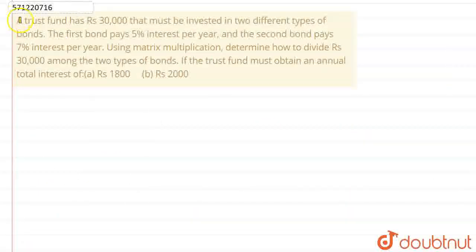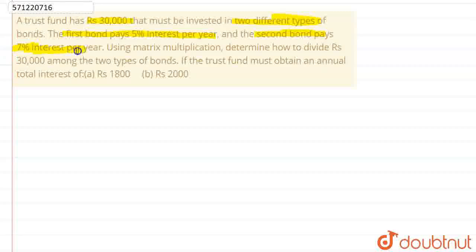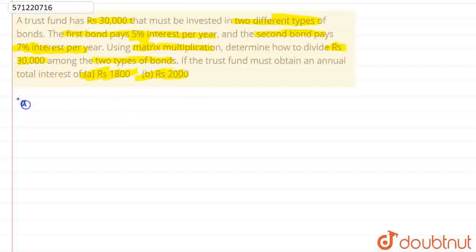Hello students, let us read this question. It is given as: a trust fund has Rs. 30,000 that must be invested into two different types of bonds. The first bond pays 5% interest per year and the second bond pays 7% interest per year. Using matrix multiplication, we have to determine how to divide Rs. 30,000 among two types of bonds. If the trust fund must obtain an annual total interest of Rs. 1800 — that is Part A — and Part B is Rs. 2000.